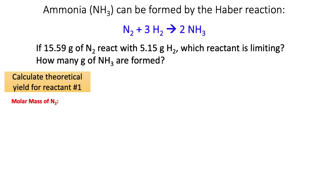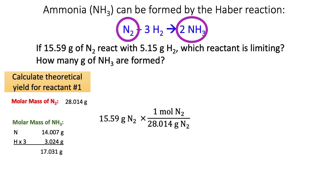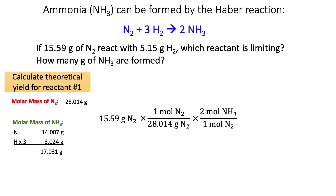We need molar masses before we do anything. The molar mass of N₂ is two times 14.007 g, which is 28.014 g for nitrogen gas. The molar mass of ammonia is the mass of nitrogen plus three times the mass of hydrogen, giving 17.031 g. Starting with 15.59 grams of nitrogen, we convert to moles of nitrogen using the molar mass, then use the mole ratio from the balanced equation — one mole of N₂ to two moles of NH₃ — and finally convert moles of ammonia to grams using the molar mass. Multiplying that all out gives not quite 19 grams of ammonia.